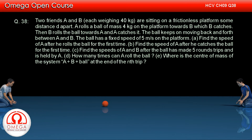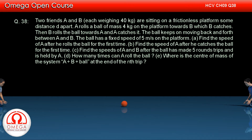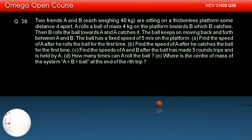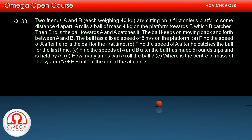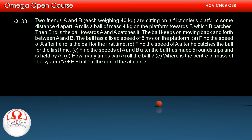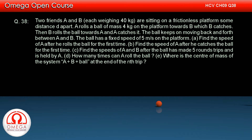Part A: Find the speed of A after he rolls the ball for the first time. Part B: Find the speed of A after he catches the ball for the first time. Part C: Find the speeds of A and B after the ball has made 5 round trips and is held by A. Part D: How many times can A roll the ball? Part E: Where is the center of mass of the system A plus B plus ball at the end of the nth trip?